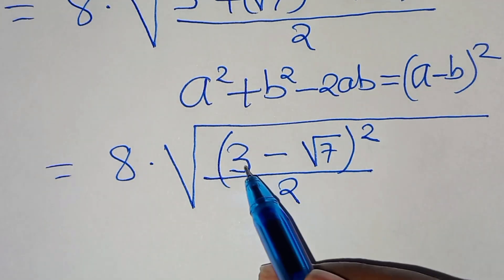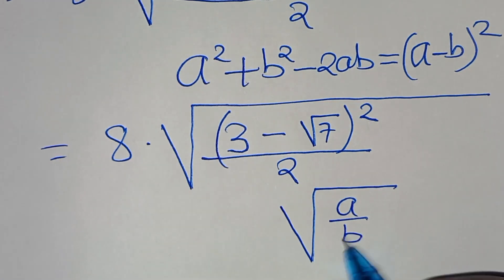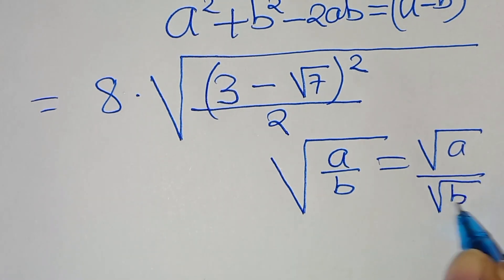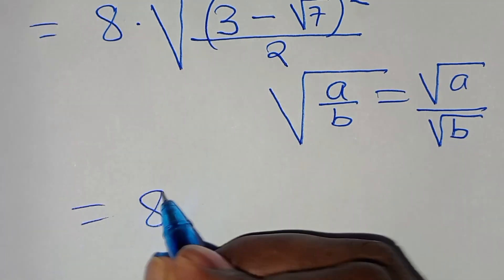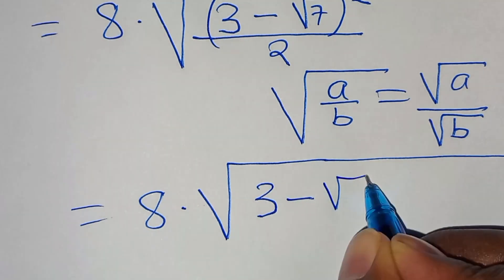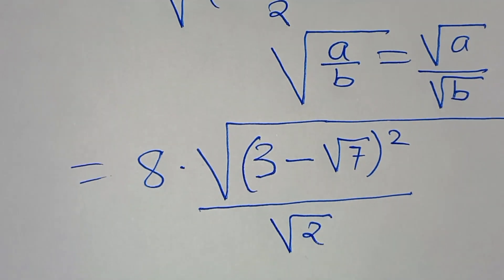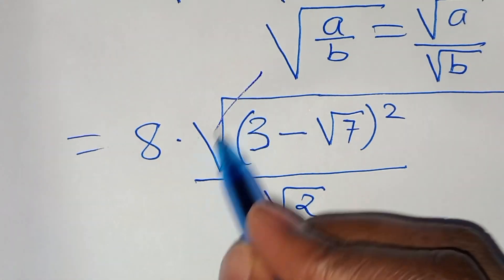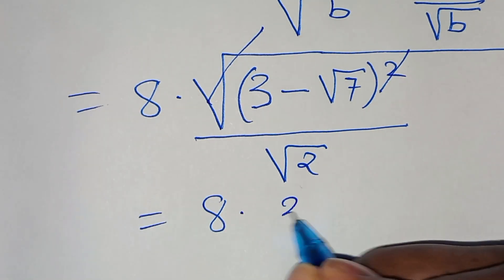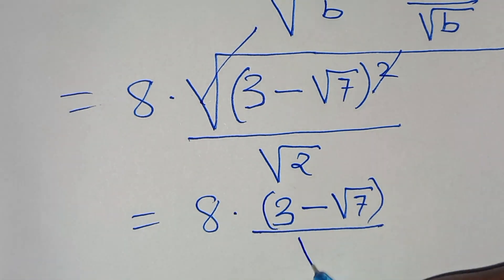So we have the square root of 3 minus square root of 7, raised to the power of 2, over 2. This is in the form of square root of a over b, which we can express as square root of a divided by square root of b. So therefore we have 8 multiplied by 3 minus square root of 7 raised to the power of 2, divided by square root of 2. Simplifying the square root, we get 8 multiplied by 3 minus square root of 7, all divided by square root of 2.